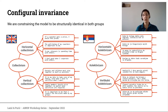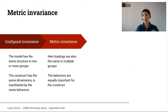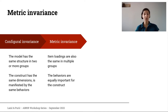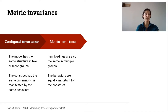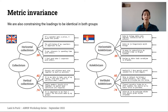We first estimate the model on the whole sample, then test whether the model is the same in the two groups. If we demonstrate configural invariance, we can move on to demonstrating metric invariance, which refers to item loadings being the same across the multiple groups. This means that all behaviors and items are equally relevant for the construct. For example, the item 'parents and children must stay together as much as possible' is assumed to be an equally good representative of vertical collectivism in both samples.